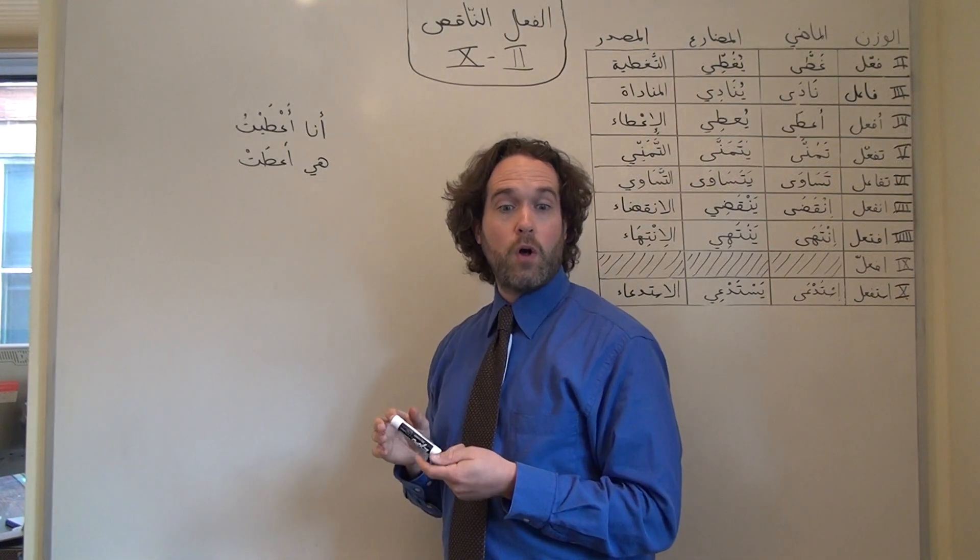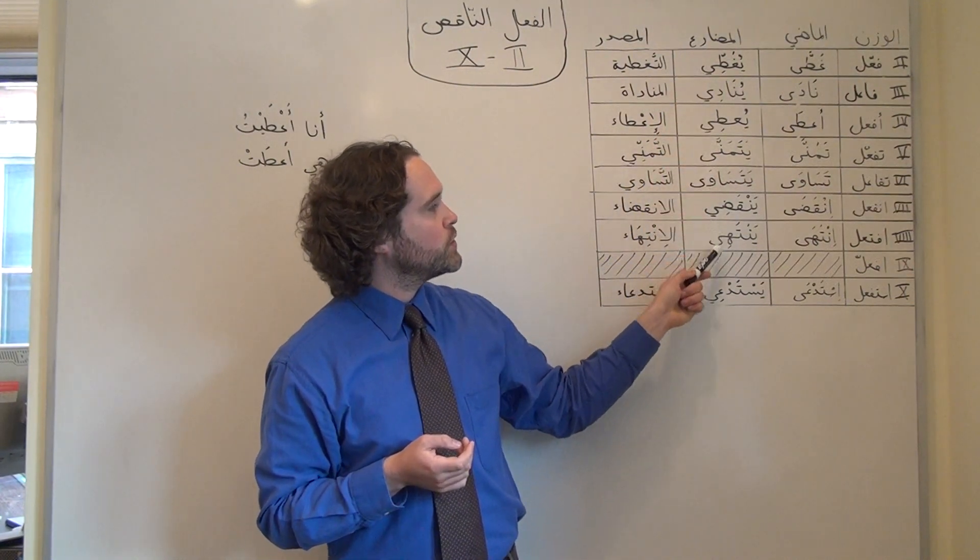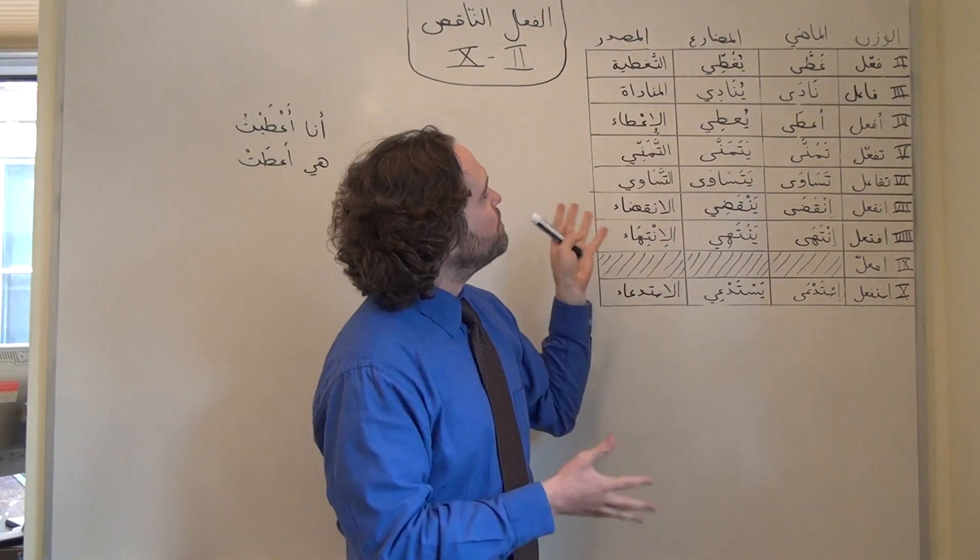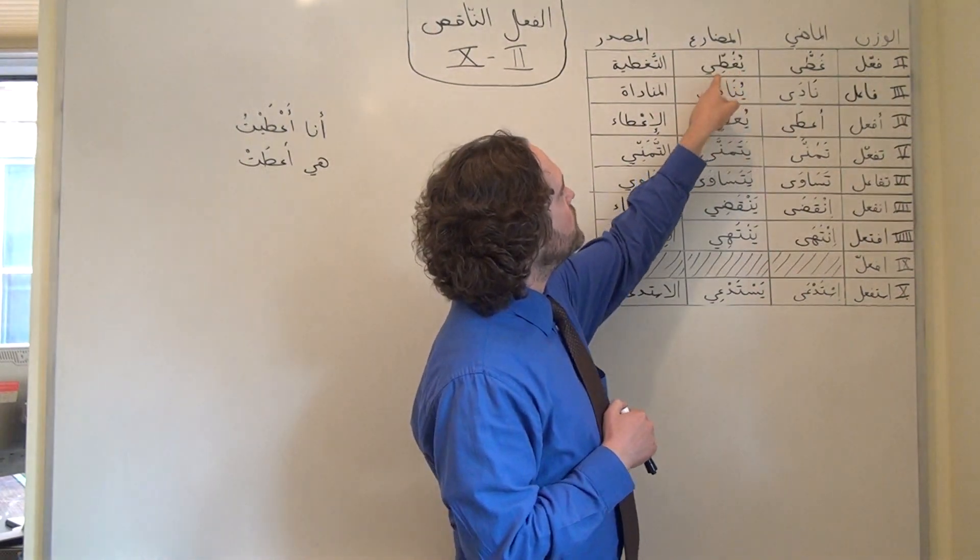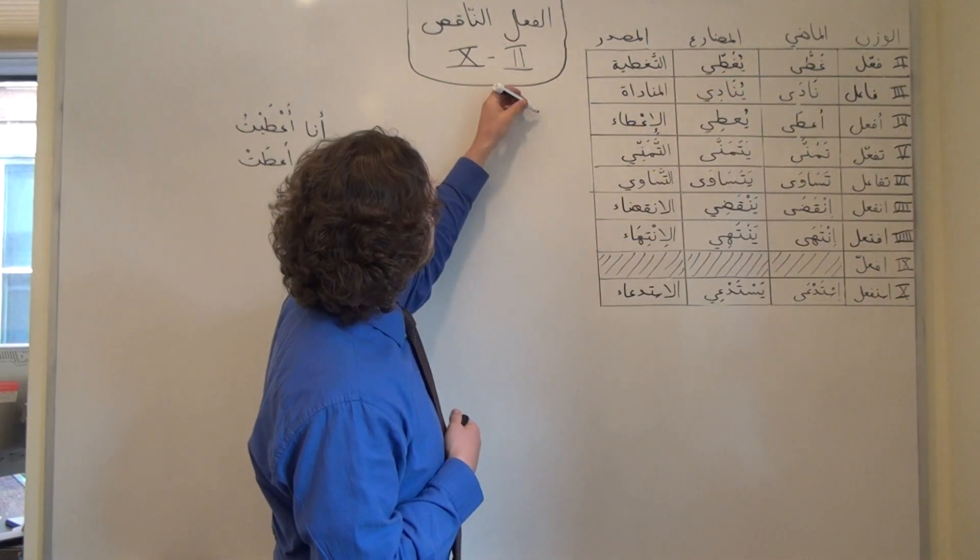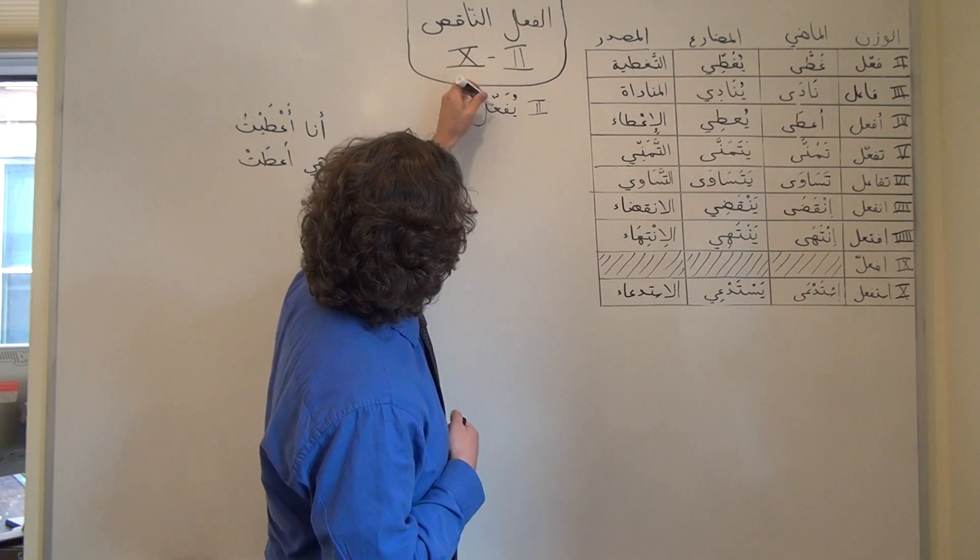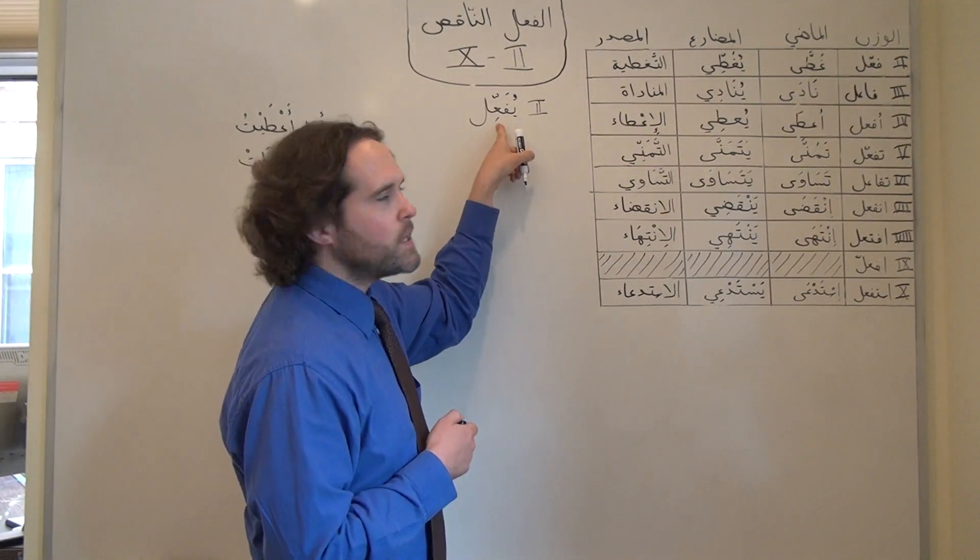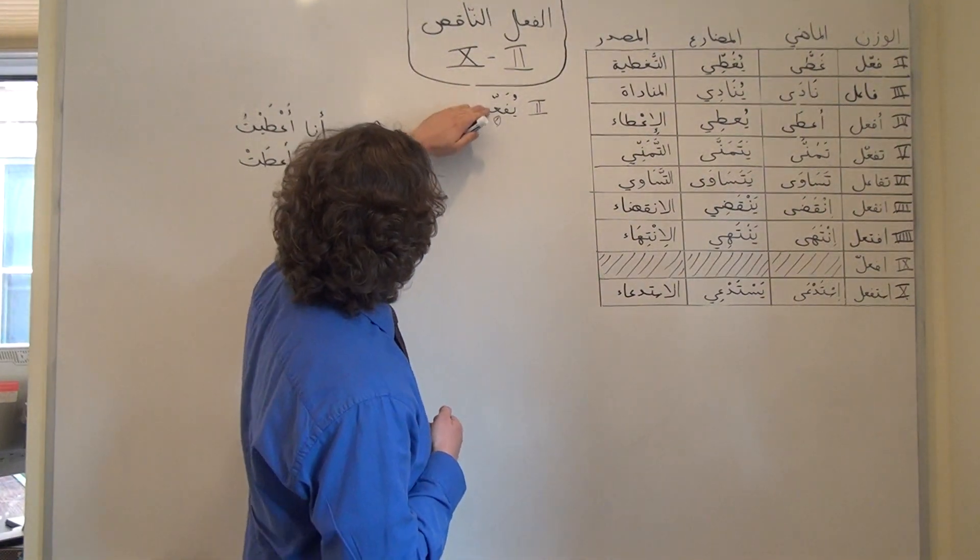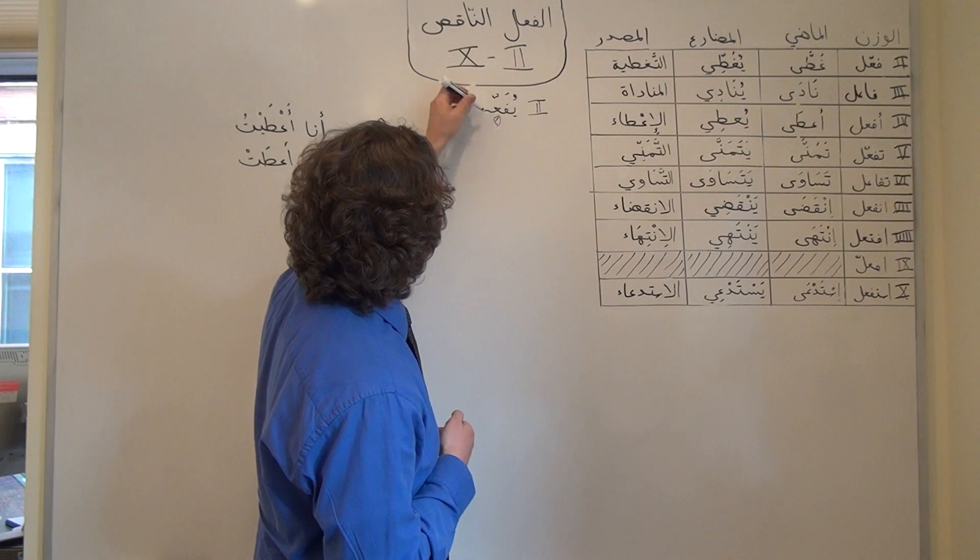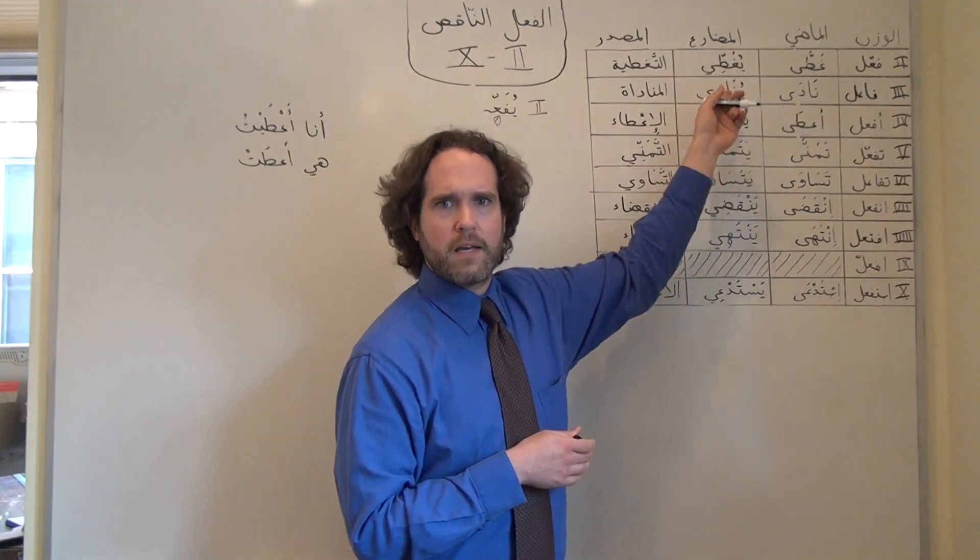You'll also notice that in the present tense, we can predict this vowel in the هو conjugation, or in any conjugation without a suffix, on the basis of the vowels that form the pattern. So for example in يغطي, if you remember that that pattern, that Form 2 pattern يُفَعِّل has a كسرة on the second to last letter, then we can predict that that كسرة is going to turn this last vowel into its longer counterpart. In this case, a يا. So in Form 2, it'll always be a يا in a هو conjugation.